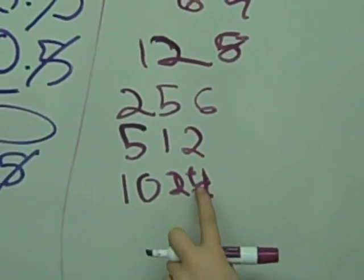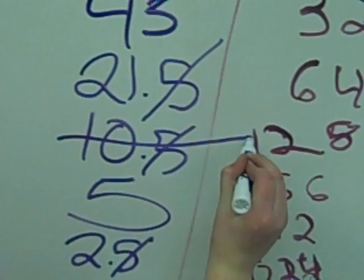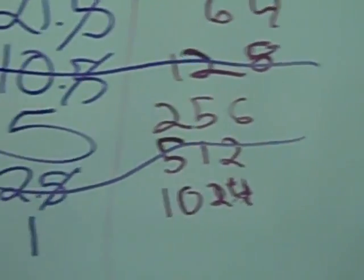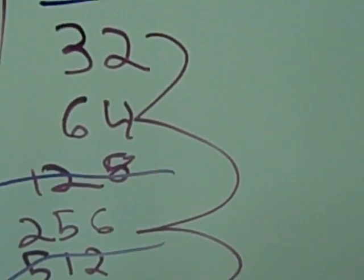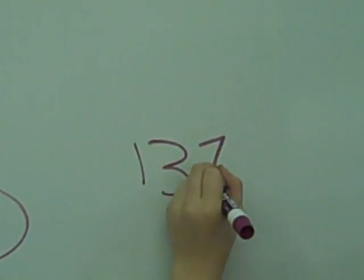So we cross out the even numbers all the way through. And then we add all of this that's not crossed out together. And the answer is 1,376.